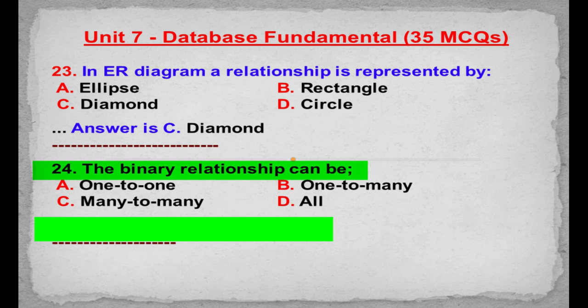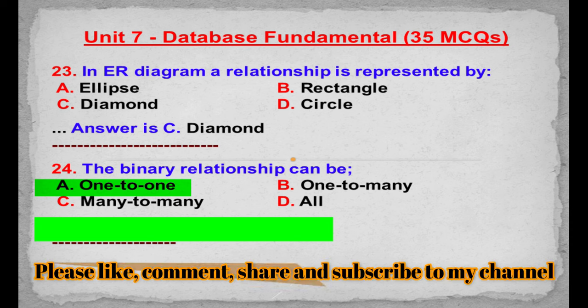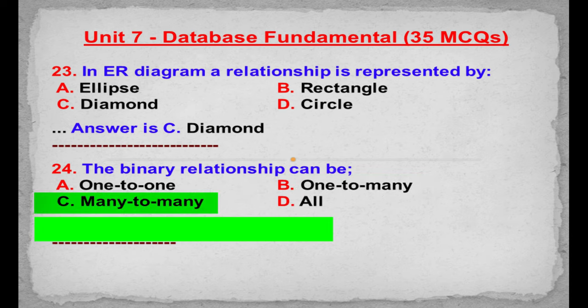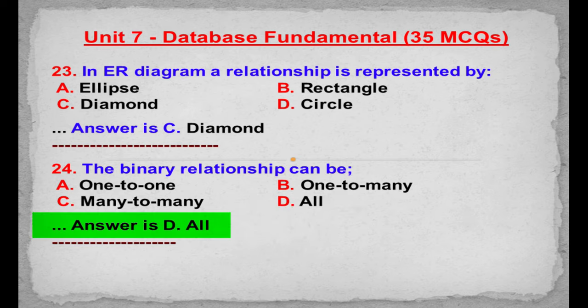MCQ number 24: The binary relationship can be. Option A: One to one. Option B: One to many. Option C: Many to many. Option D: All. Correct answer is Option D: All.